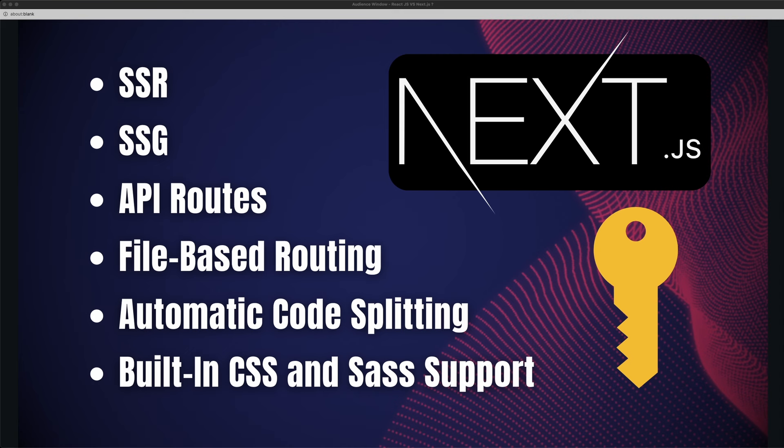What are the key features of Next.js? First, SSR — server-side rendering — which generates HTML on the server for each request, improving initial load time and SEO. Then static-site generation, or SSG, which generates static HTML at build time and can be served quickly and efficiently. And API routes, which allow you to create API endpoints as part of your application without setting up a separate server.